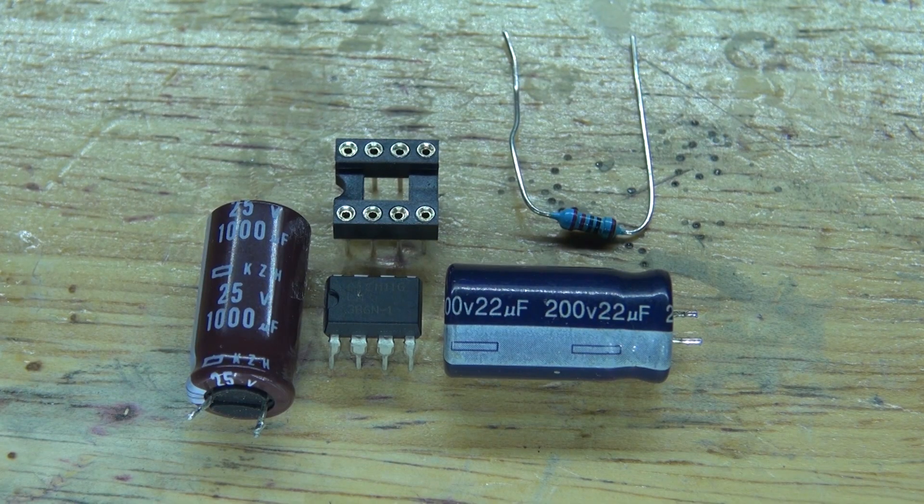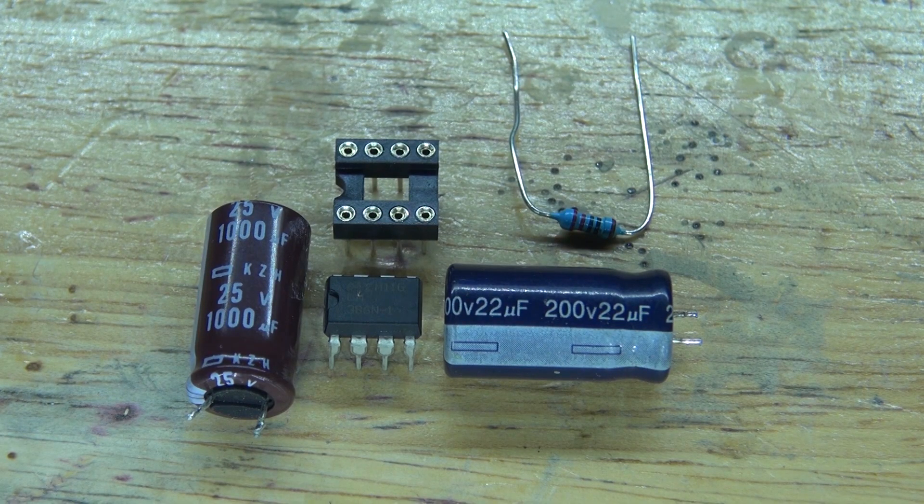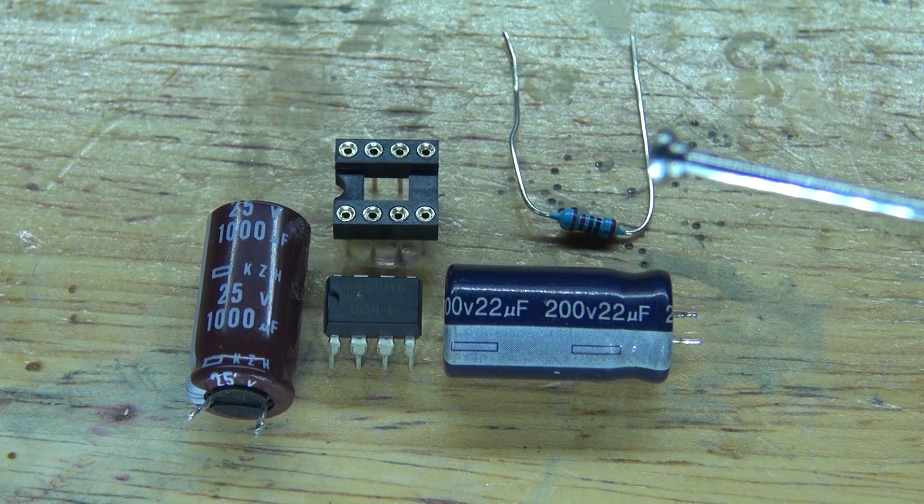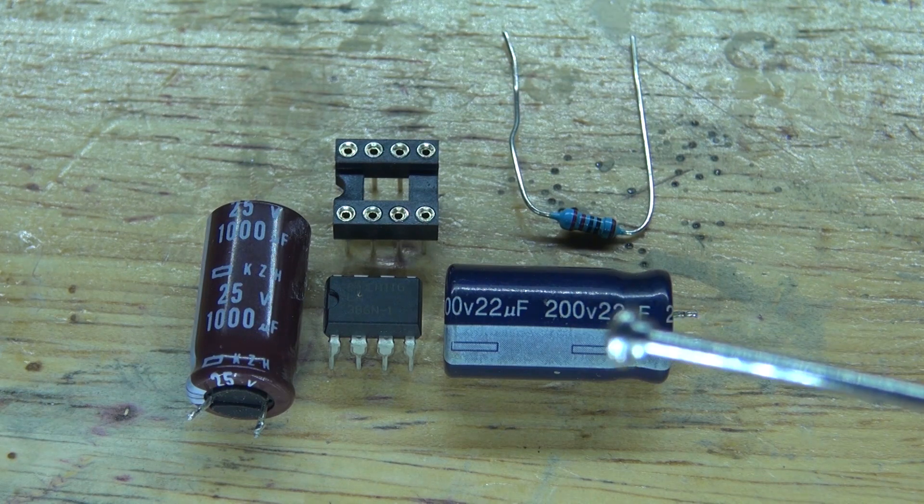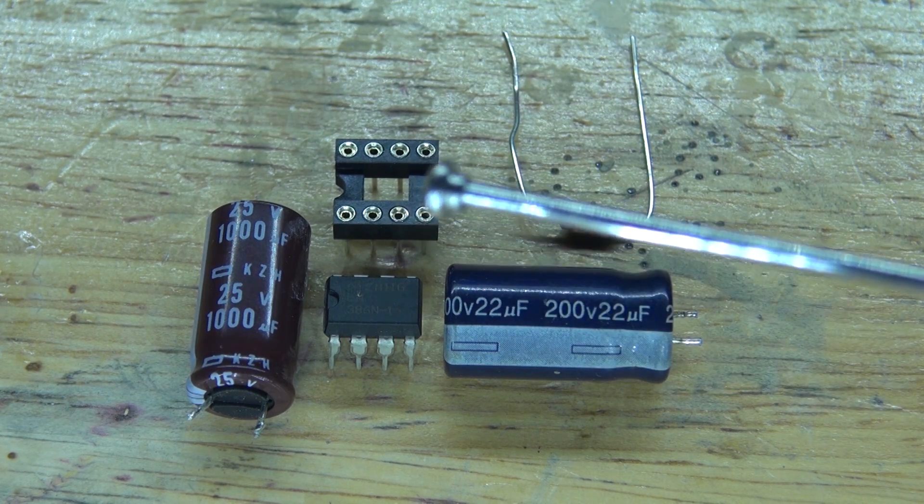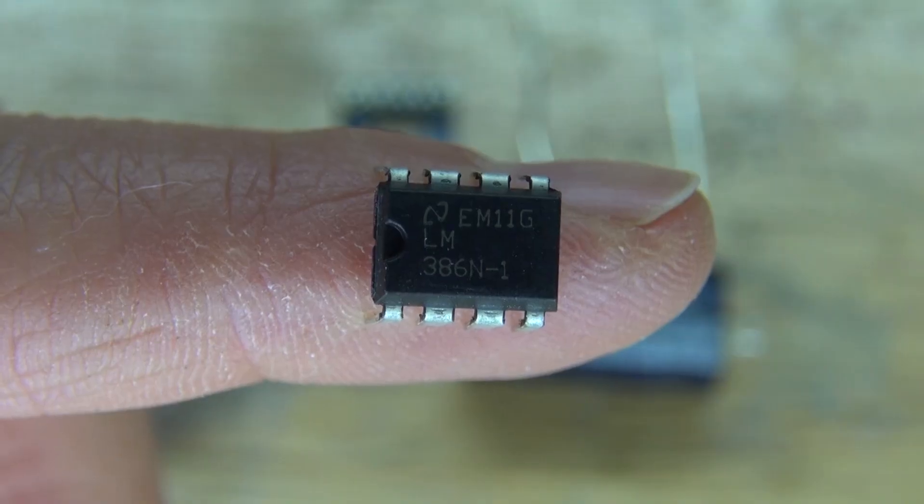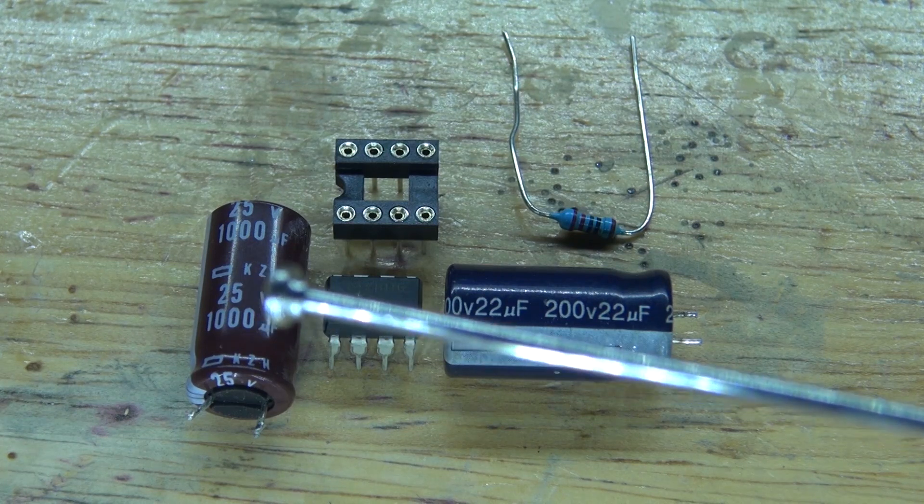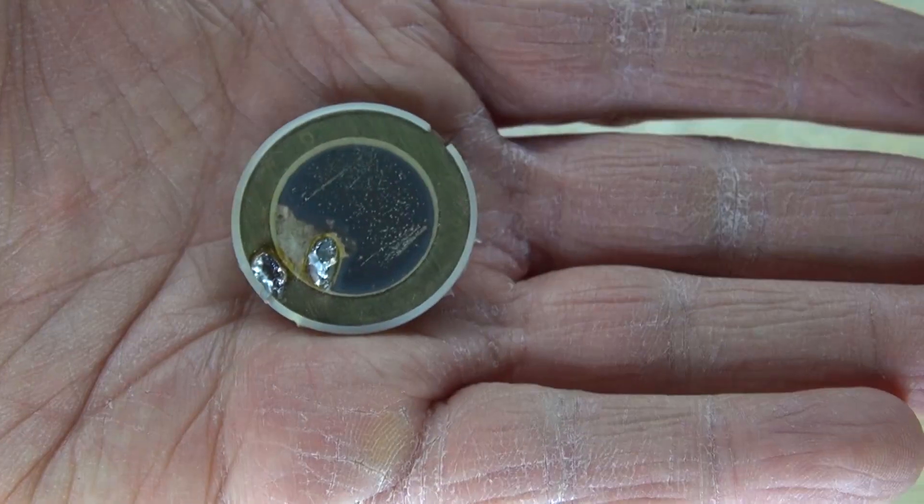These are the items you're going to need to make for this project. The items you're going to need are a 220 ohm resistor, a 22 microfarad electrolytic capacitor, an 8 pin IC socket holder, an LM386 audio amplifier, a 1000 microfarad electrolytic capacitor, and a piezo.